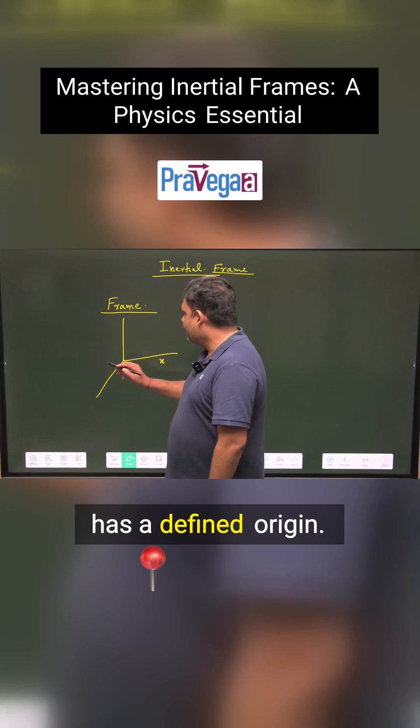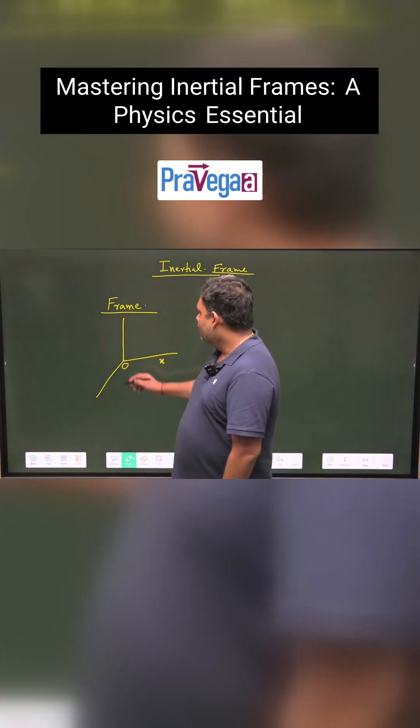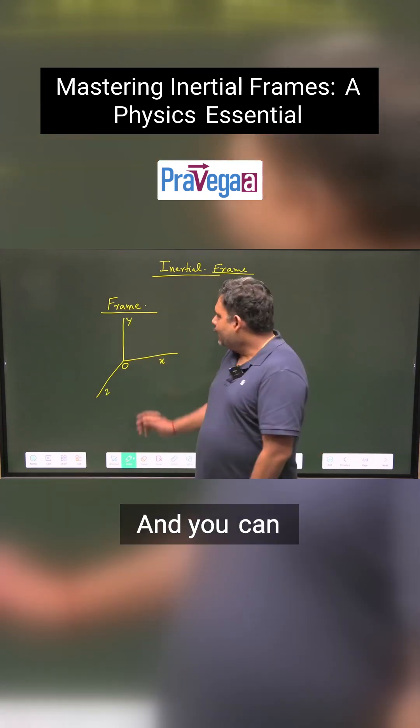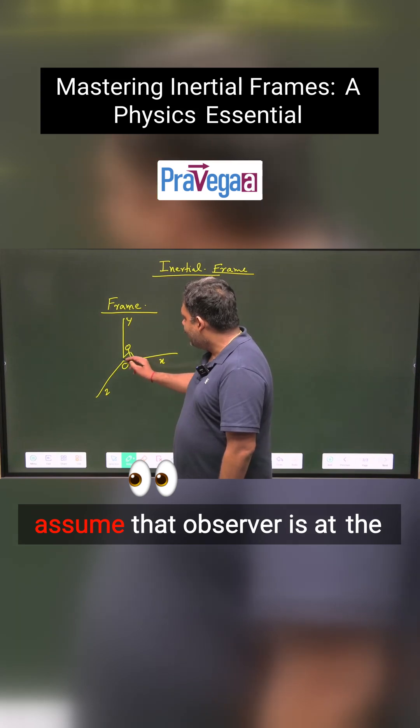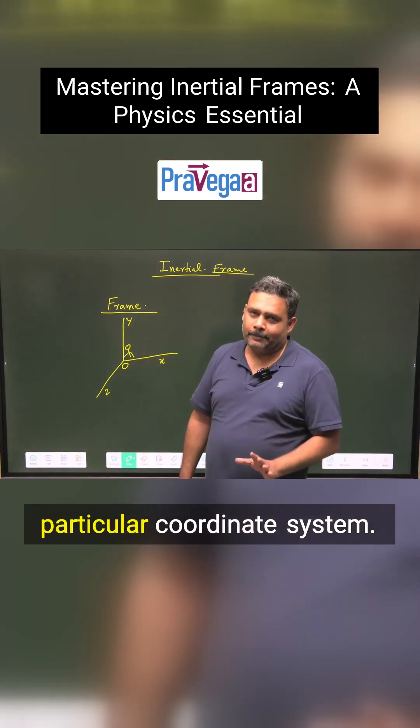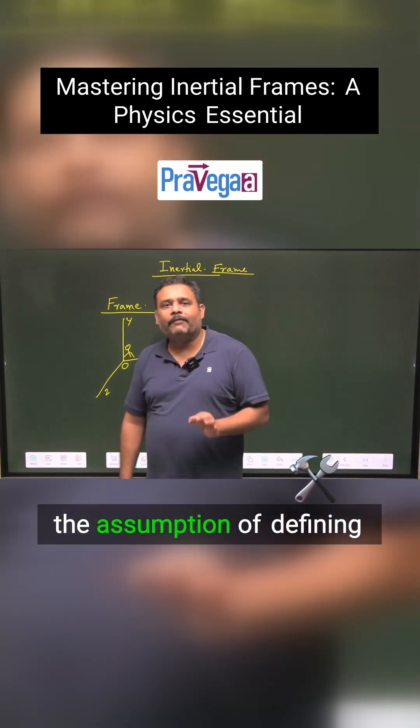So you can say this is x, this will be y, this will be z, and you can assume that the observer is at the origin of this particular coordinate system. This is the assumption of defining frame.